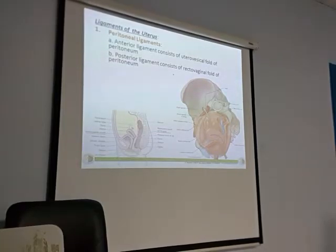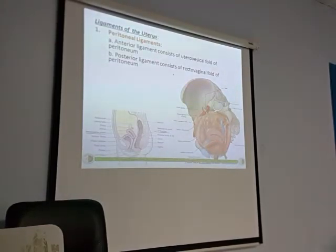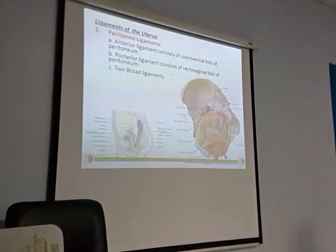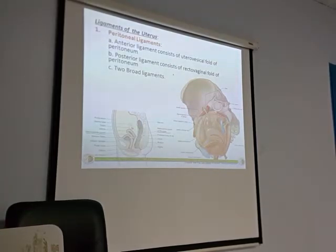The pouch of Douglas is the most dependent part when the person is erect — sitting or standing. If the person lies down, there are other areas which become most dependent. So in the erect posture, the pouch of Douglas is the most dependent area. These are called ligaments but they are not true ligaments — they are just peritoneal folds covering the organs. In front we have the anterior ligament, posterior we have the posterior ligament. On the sides we have the fallopian tubes — the broad ligament will be hanging from front to back, and that will be part of the broad ligament.